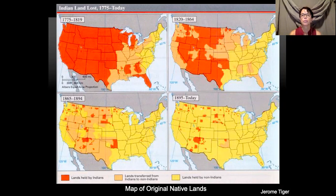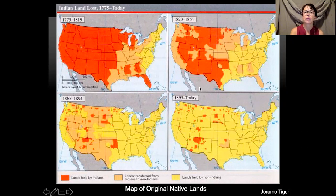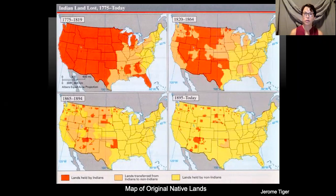This first slide shows you where Native Americans lived over 200 years ago. In the upper left-hand corner, we can see a lot of orange — that's where the Native Americans lived over 200 years ago. Today, down in this corner, most of it's yellow, where non-Native Americans live. We're going to learn about why that happened as we learn more about Jerome Tiger and his art.